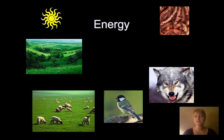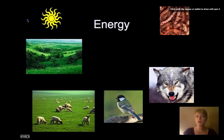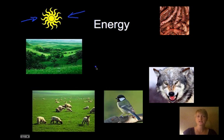We're still talking about ecology and now we're going to talk about energy and how that energy flows through the environment. It all starts with the Sun — all of our energy comes from the Sun. That's our heat energy, our solar energy, and our food energy.